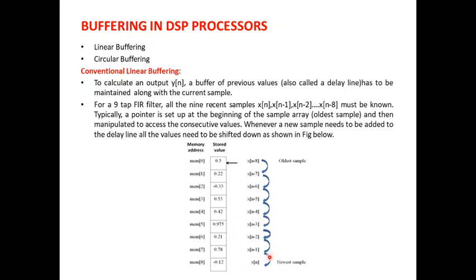This x of n has to be fetched. In order to obtain this, what happens is all these input samples have to be moved one location below so that we obtain the next newest sample. Hence, when performing linear buffering,